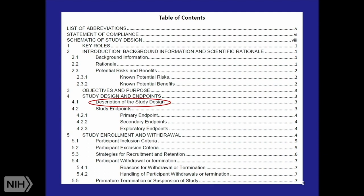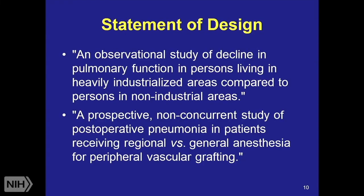One of the key elements that you want to have fully described in your protocol is the description of the study, and I have two different examples here. The first is an observational study of decline in pulmonary function in persons living in heavily industrialized areas compared to persons in non-industrialized areas. The second is a prospective non-concurrent study of post-operative pneumonia in patients receiving regional versus general anesthesia for peripheral vascular grafting.